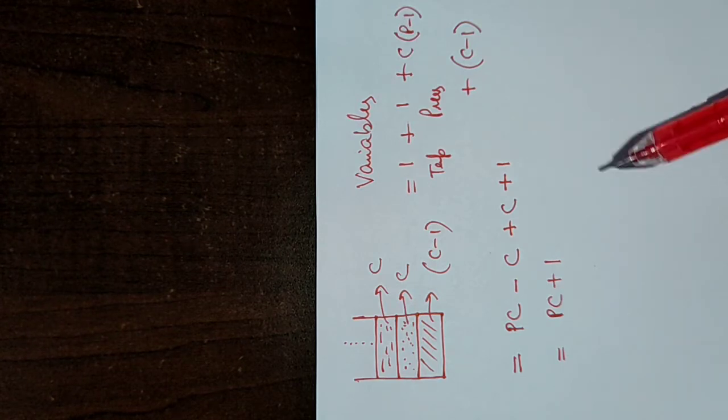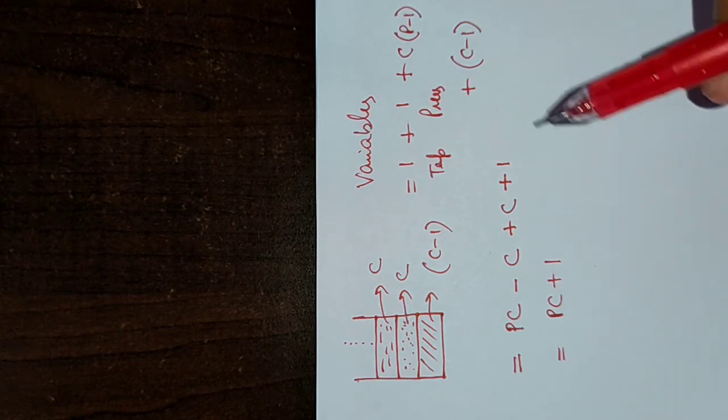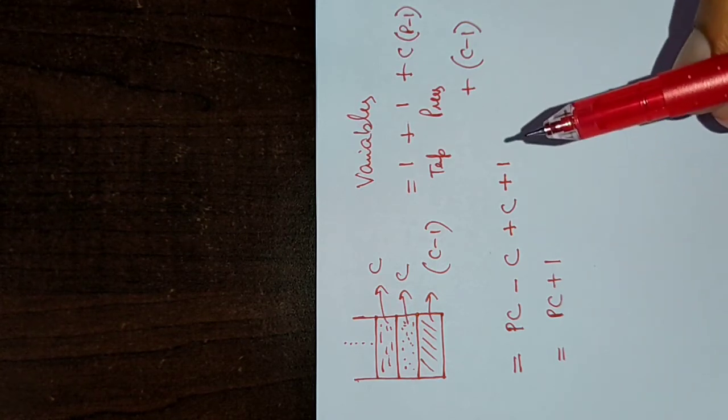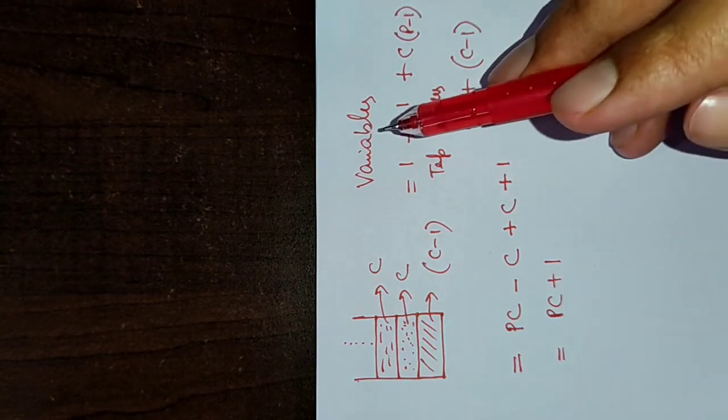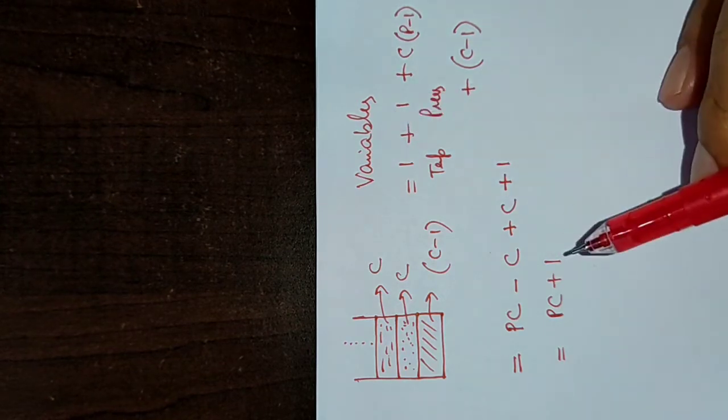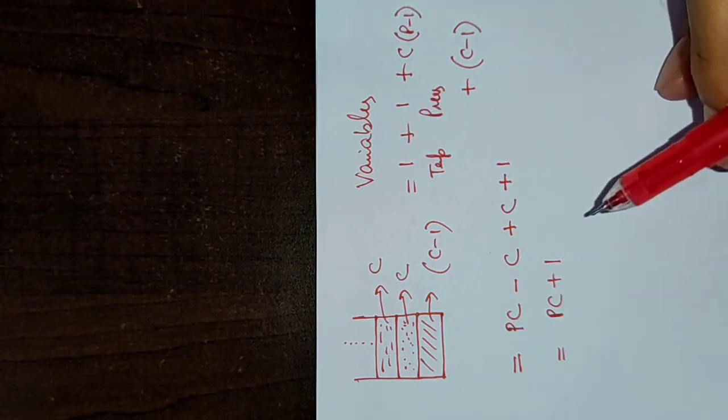This result is obvious since one component is missing from only one phase, so one variable less is required. This is the reason why there is a decrease in the number of variables by unity.